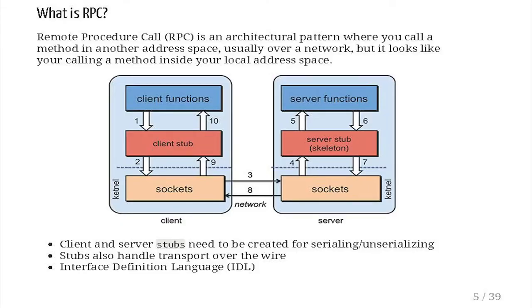So just a short introduction — what is RPC? Basically, it's a paradigm where you can call a function from one address space over a network, and execute a function that's implemented in another address space. For this to work, both the client and the server need something called stubs, which handles the message encoding and the transporting of the message.